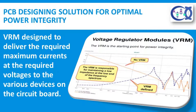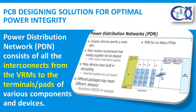A circuit board requires one or more power supply voltages to operate. Voltage regulator modules, or VRMs, mostly generate these. These VRMs are designed to deliver the required maximum currents at the required voltages to the various devices on the circuit board. The power distribution network, or PDN, consists of all the interconnects from the VRMs to the terminals or pads of various components and devices, including ICs, all the bulk and ceramic decoupling capacitors, power and ground planes, the intervening vias, traces, and the relevant leads, solder balls, wire bonds, etc., of the device packages.